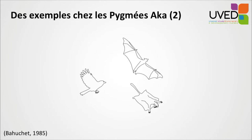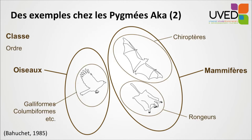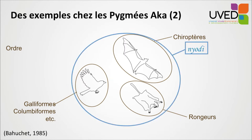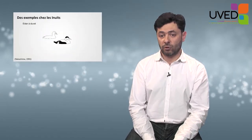Aka pygmies classify three animals — a bat, a bird, and a flying squirrel — differently from science. Scientifically, these are divided between birds and mammals, covering three orders: Columbiformes or Galliformes for birds, Chiroptera for bats, and Rodentia for the squirrel. But for Aka pygmies, these three animals belong to the same category, Neody — flying vertebrates — which can also be eaten. They are edible for Aka pygmies.